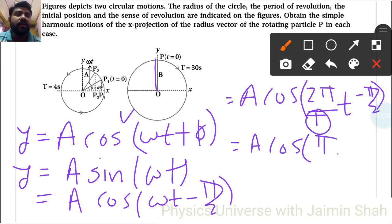So initial phase here is minus π by 2. So that is initial phase of this particular figure, φ is equal to minus π by 2.